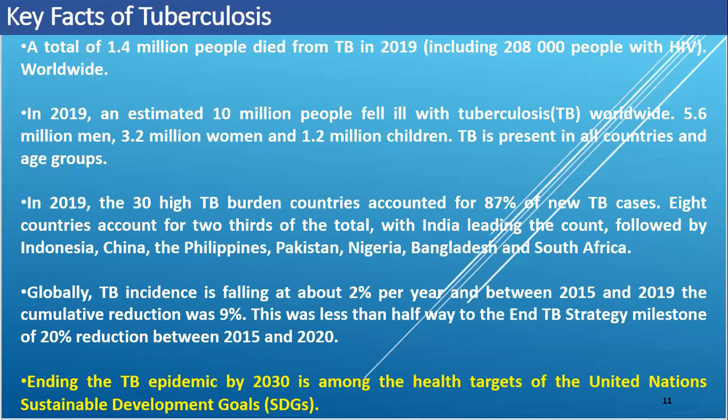Eight countries account for two-thirds of the total cases, with India leading the count, followed by Indonesia, China, the Philippines, Pakistan, Nigeria, Bangladesh, and South Africa. TB incidence is falling but still less than the target set. Ending the TB epidemic by 2030 is among the health targets of the United Nations Sustainable Development Goals, SDGs.